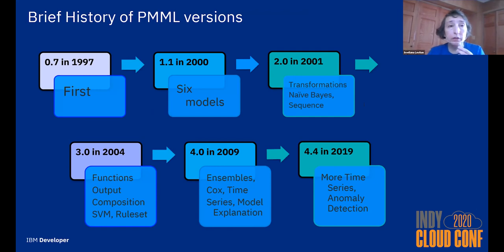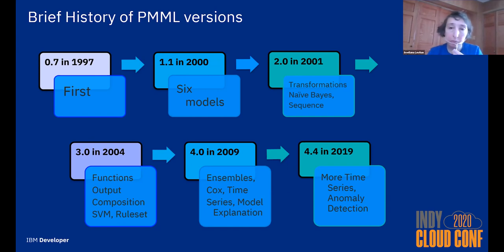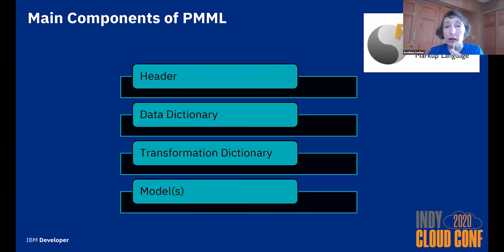PMML started in the 90s. When I started at SPSS in 2000, PMML 1.1 was in use with only six models and very few data transformations. Over the years we delivered many releases, adding more models, more data transformations, and more features with each release. The last release was last year, where we added many more parts to the time series model, a new anomaly detection model, more built-in functions, clarifications, and more.